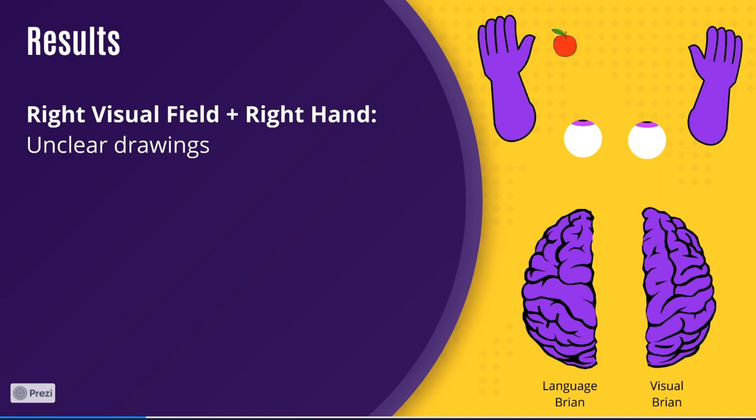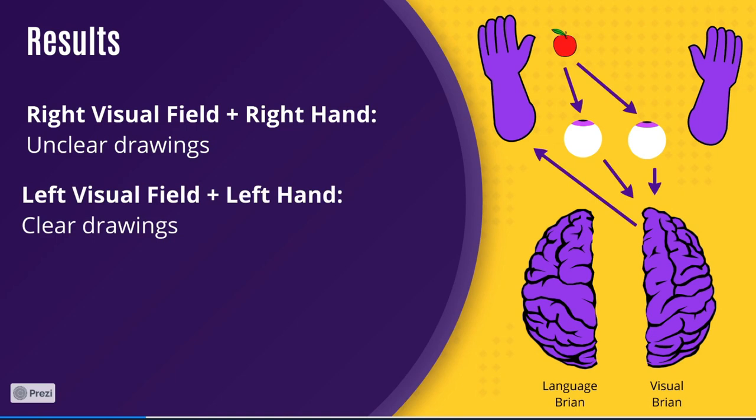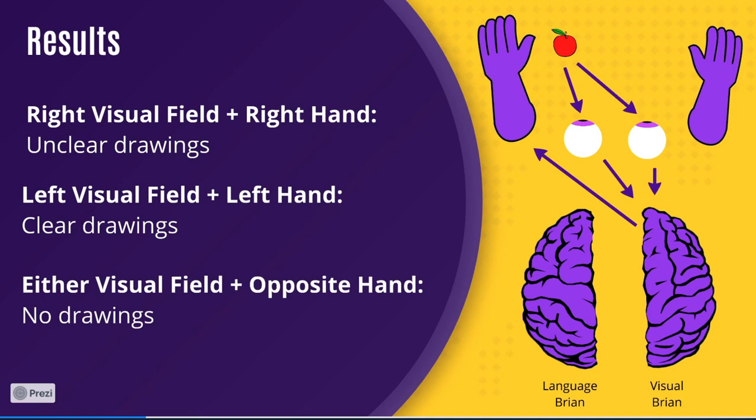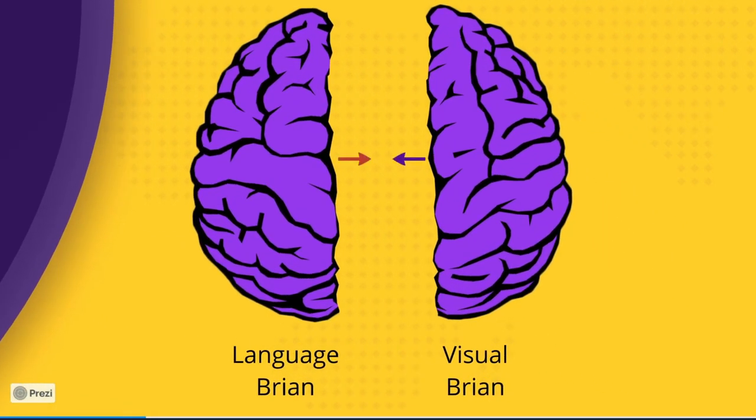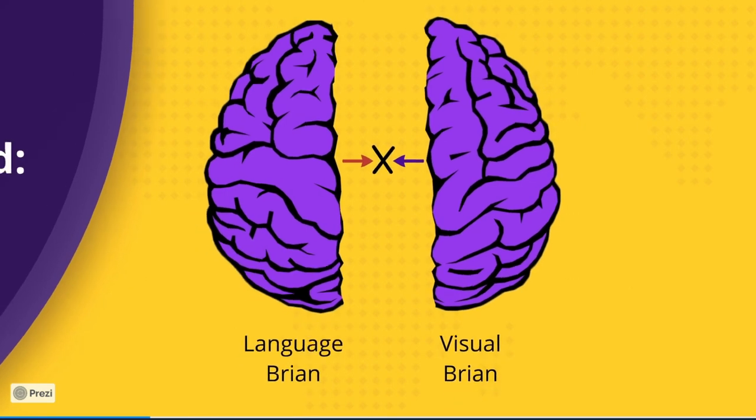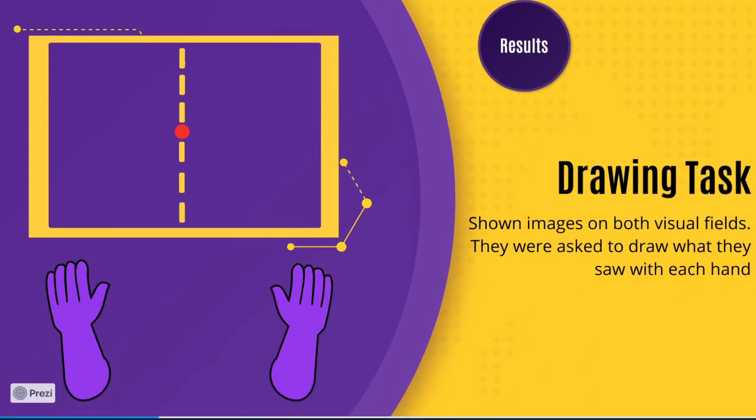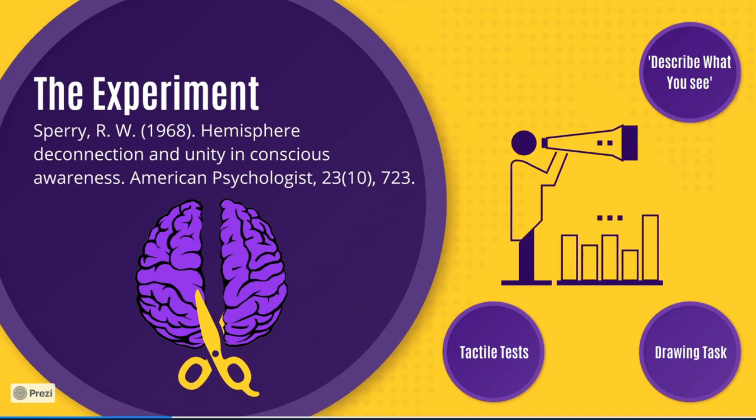Whereas when the image was shown on their left visual field, the drawings were consistently clearer despite all of them being right-handed. And as we learned from the first experiment, opposite sides would not have been able to draw anything as the two sides can't communicate. As well as showing that these people had two independent brains that worked independently, the result also solidified the idea that the left brain is dominant in terms of speech and language, while the right brain is dominant in terms of visual motor tasks.